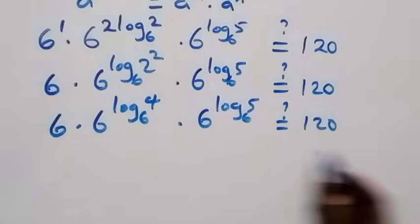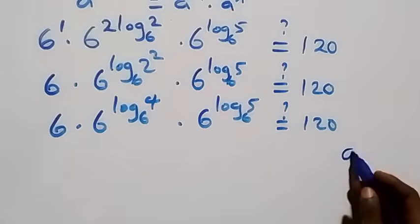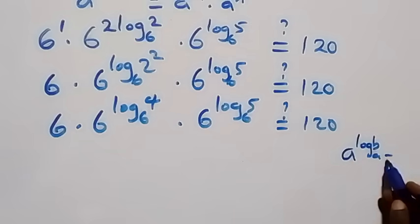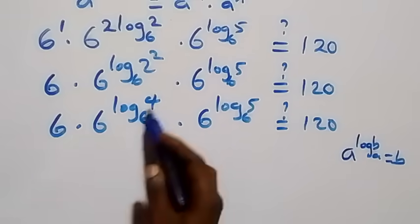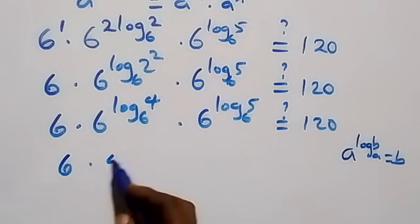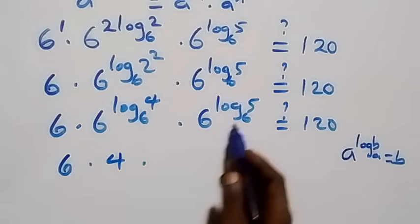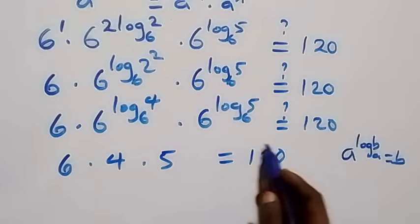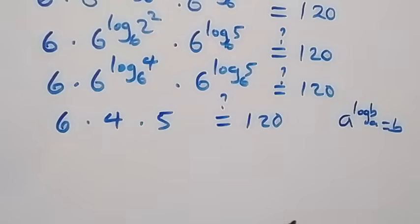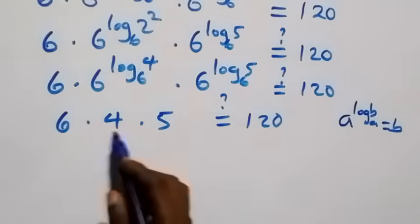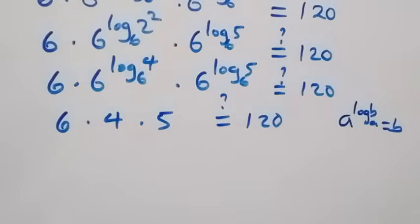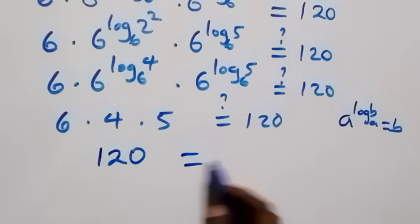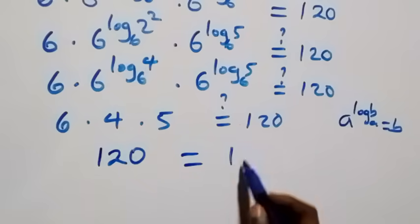By the identity a raised to power log base a of b equals b, we get 6 times 4 times 5 equals 120. So 6 times 4 is 24, and 24 times 5 is 120, which equals 120.